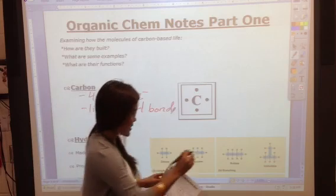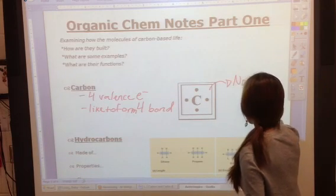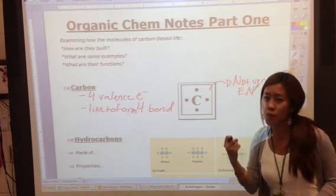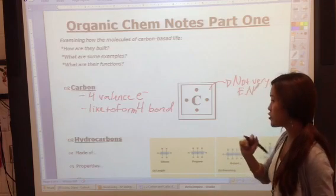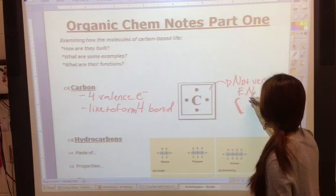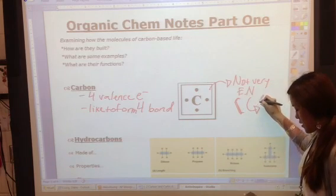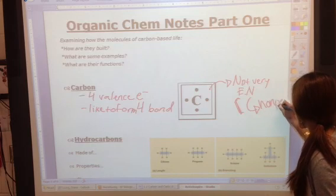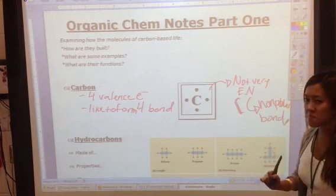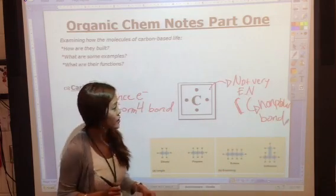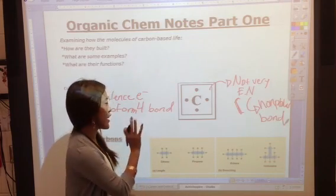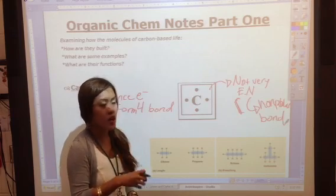Now carbon itself, keep in mind, is not very electronegative. So it doesn't really have a strong pull on those electrons that it's trying to bond with. Because of that, it does usually end up forming these non-polar bonds. The reason why bonding is so important in this event, and that's why we're spending time on this, is because the way they bond and the electronegativity can affect the function of those molecules.